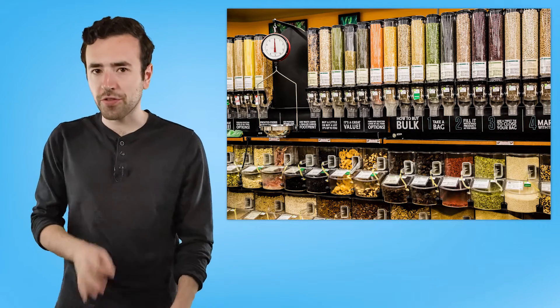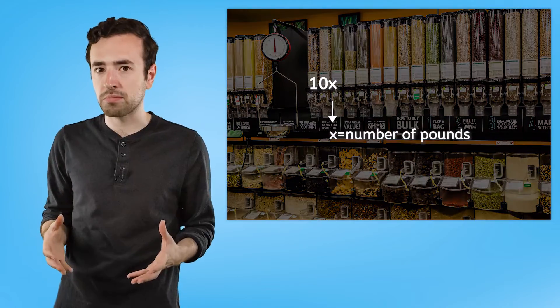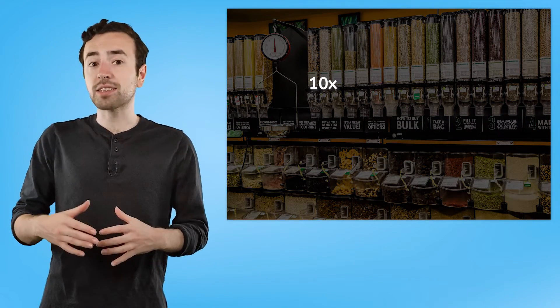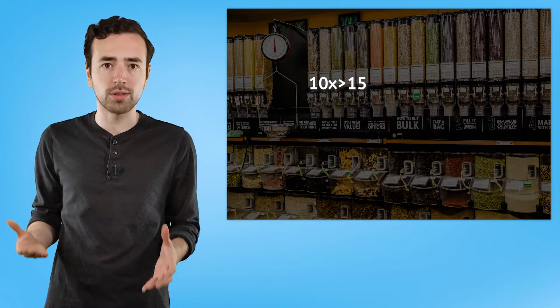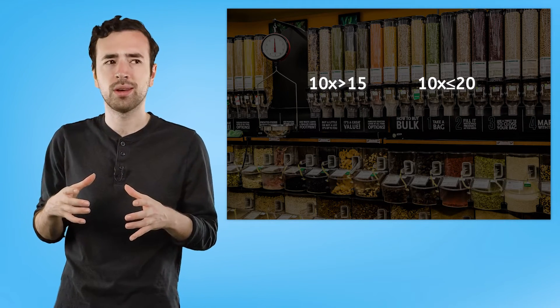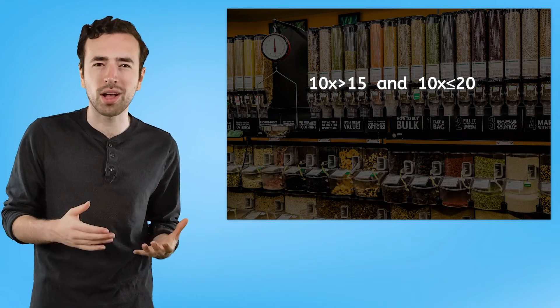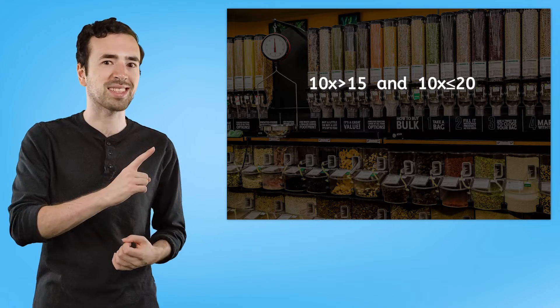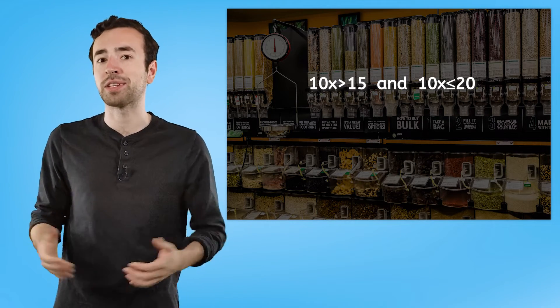Now, the dried fruit is sold by the pound, and it costs $10 per pound. I'd like to spend more than $15, but I also want to stay within a $20 budget. This means that I have two inequalities that I'm trying to fulfill at the same time, which makes this a type of compound inequality. You'll get a chance to help me figure out how many pounds of dried fruit to buy in your PDF after this video, but for now, let's get started with the lesson.